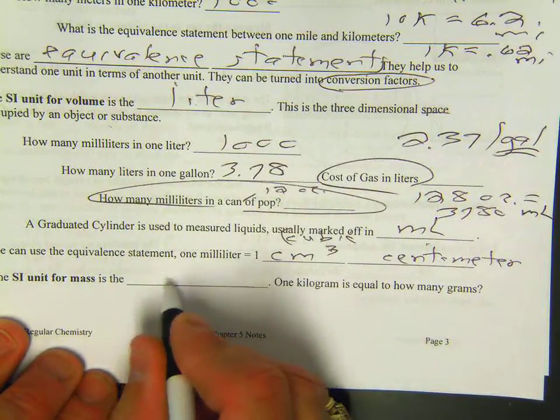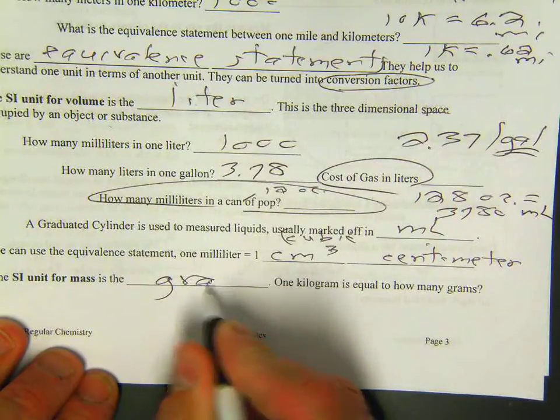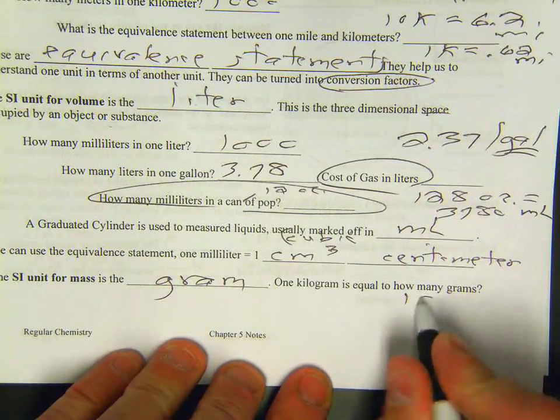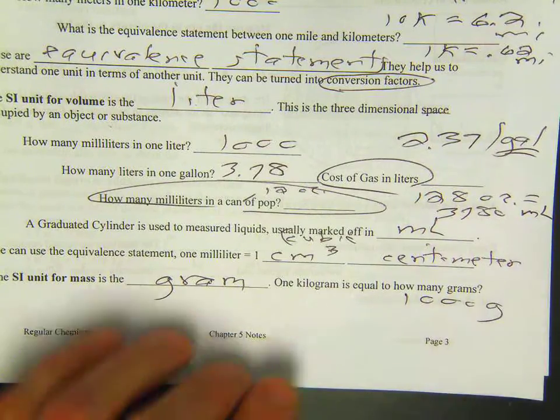SI unit for mass is the gram. One kilogram is 1,000 grams. One more page and then you're good to go.